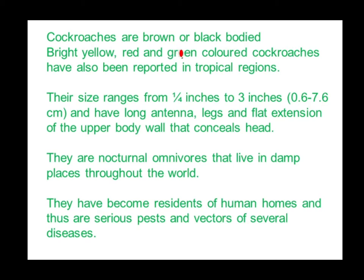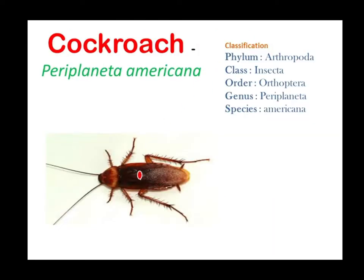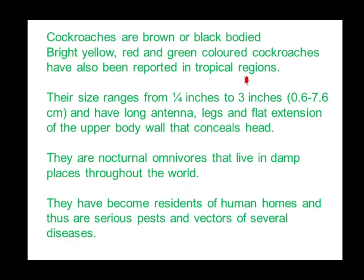Cockroaches are brown or black bodied. Bright yellow, red, and green colored cockroaches have also been reported in tropical regions. The brown or black bodied cockroaches are common in our area — that is Periplaneta americana. The size ranges from one-quarter inch to 3 inches, that is 0.6 to 7.6 centimeters.